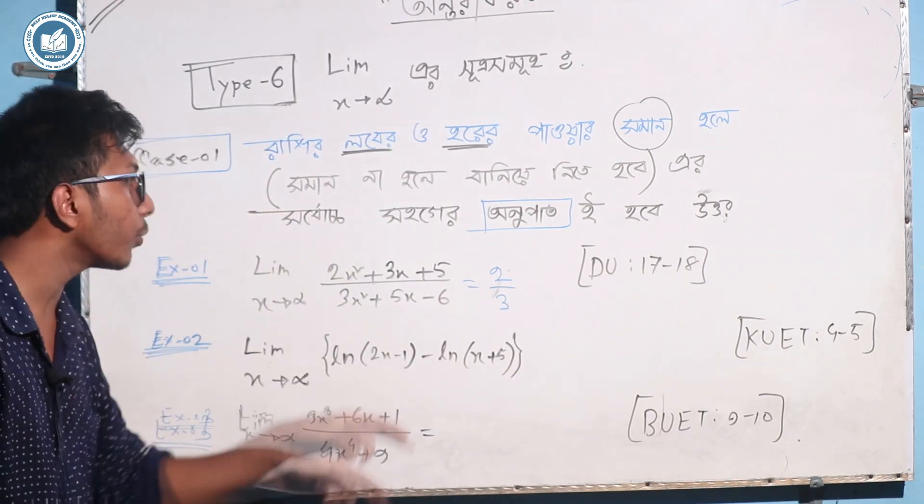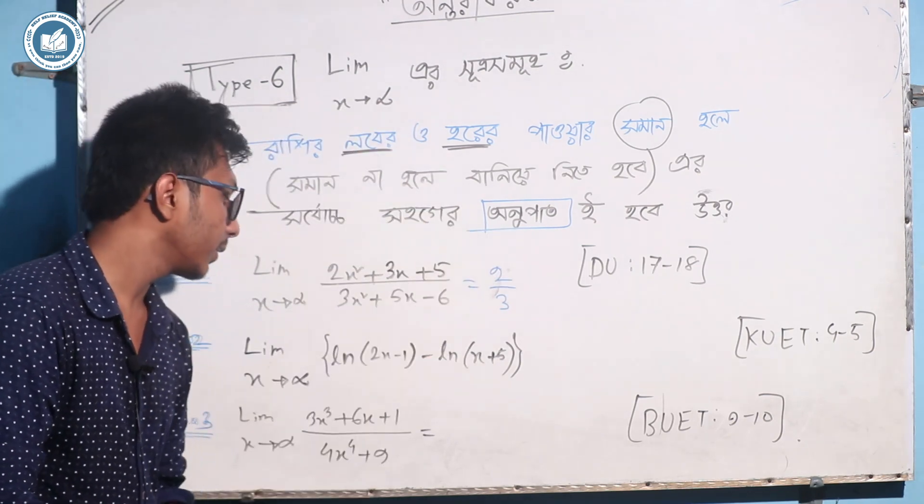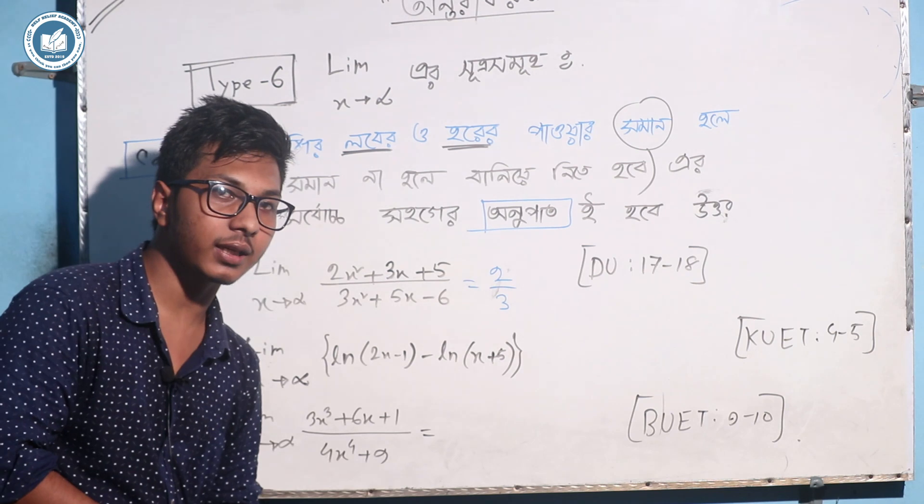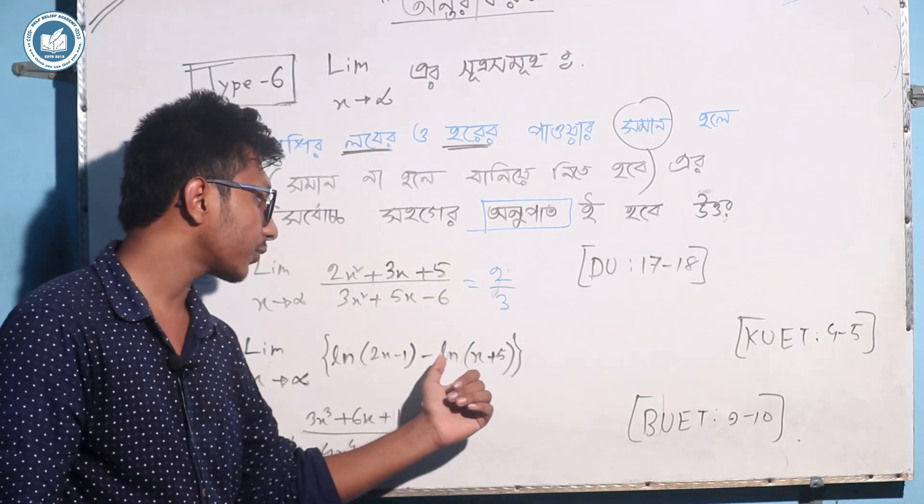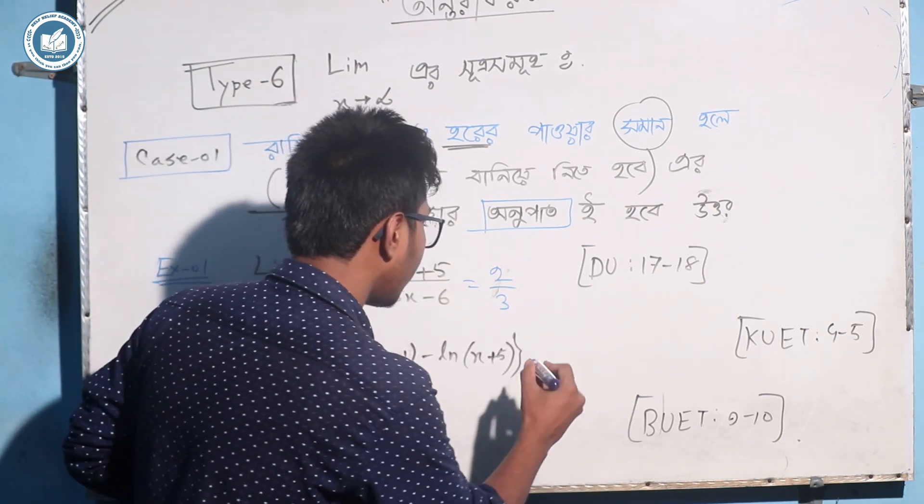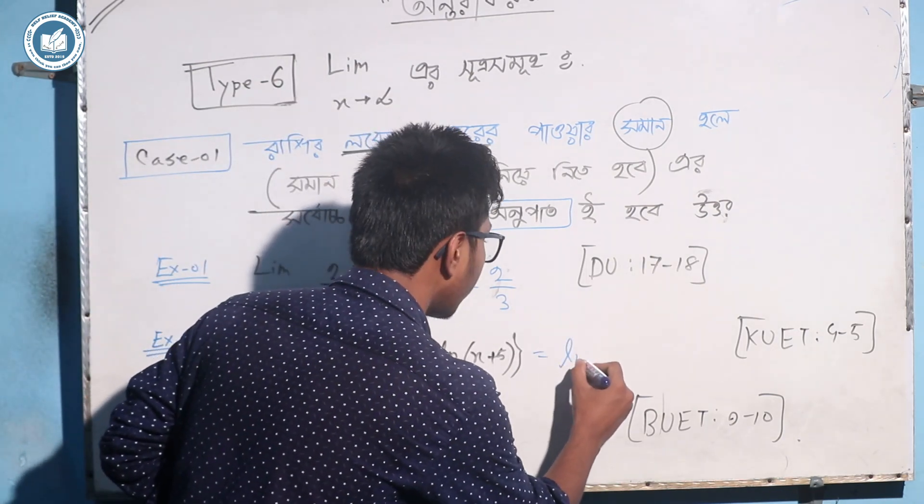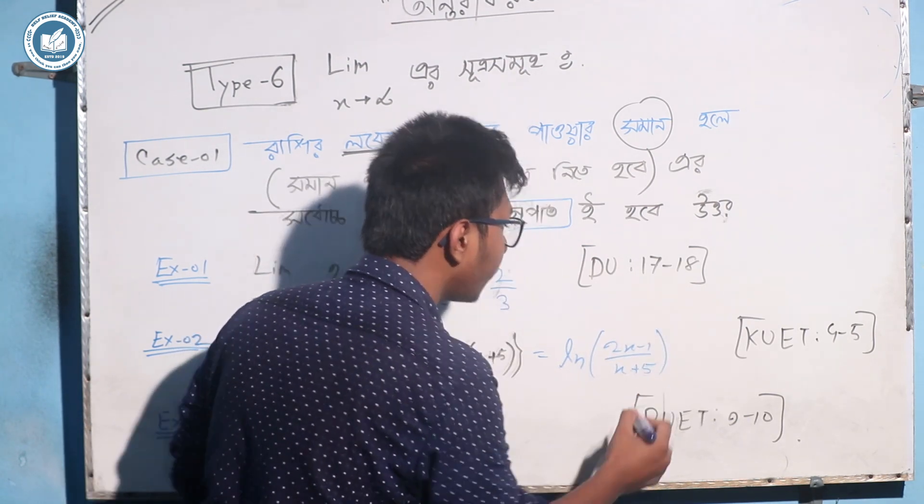For example, limit x tends to infinity, minus infinity factor. When x tends to infinity, I have to learn 2x minus 1 minus ln x plus 5. I have to write down the ln 2x minus 1 by x plus 5.